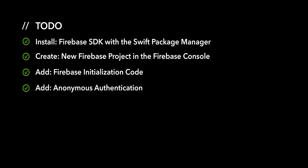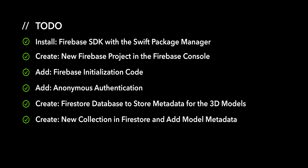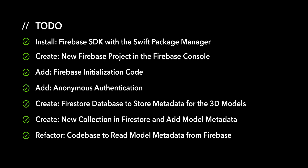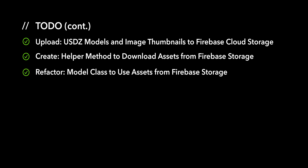After that, we'll enable anonymous authentication. Next, we'll create a Firestore database to store metadata for our 3D models. After that, we'll create a new collection in Firestore and add model metadata. Next, we'll refactor the code base to read model metadata from Firebase. After that, we'll upload USDZ models and image thumbnails to Firebase Cloud Storage. Next, we'll create a helper method to download thumbnails and USDZ models from Firebase Storage. And finally, we will refactor the model class to use thumbnails and USDZ models retrieved from Firebase Storage.